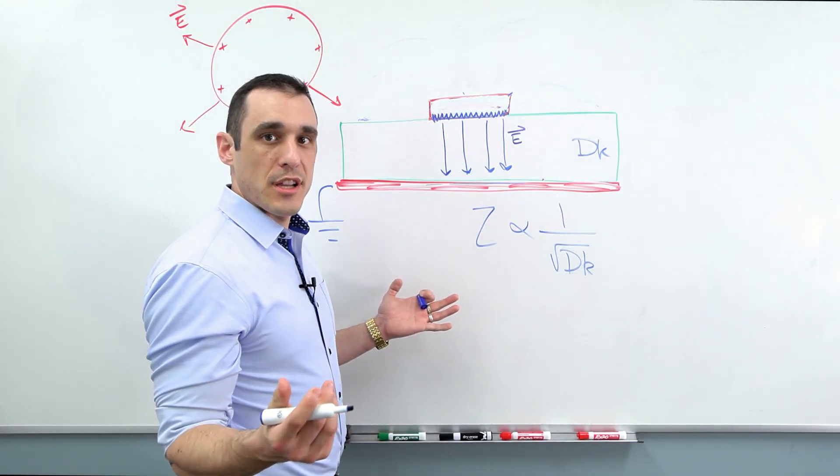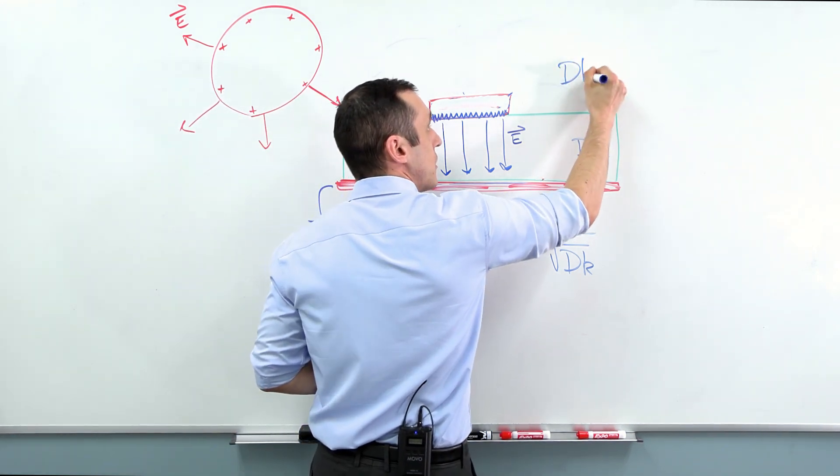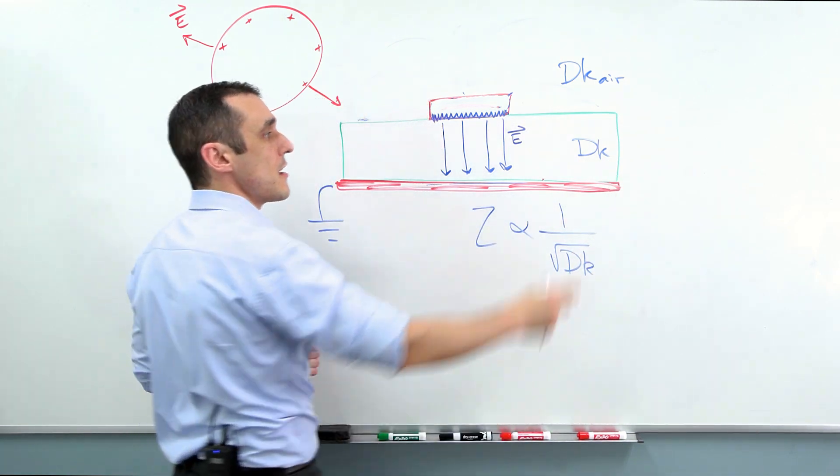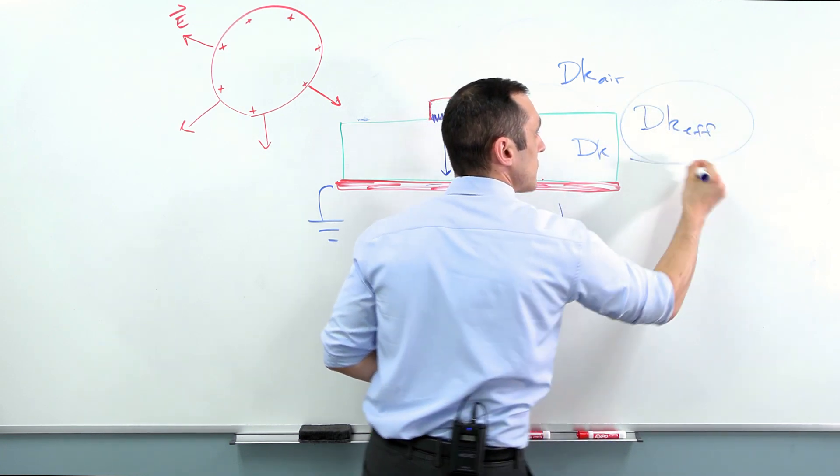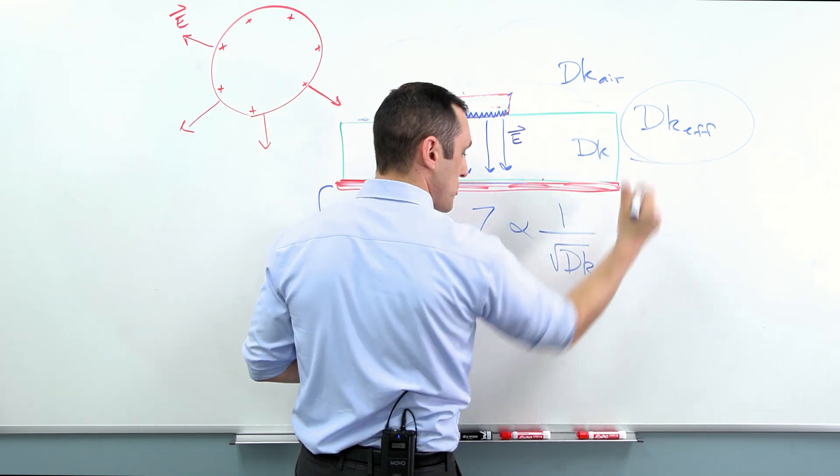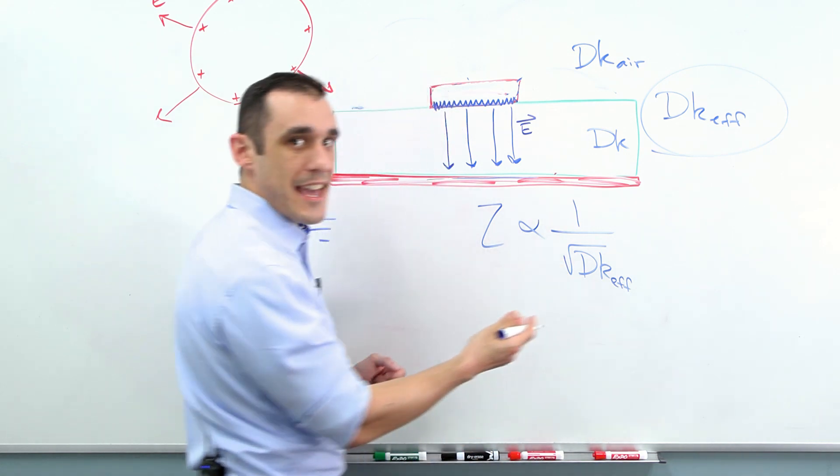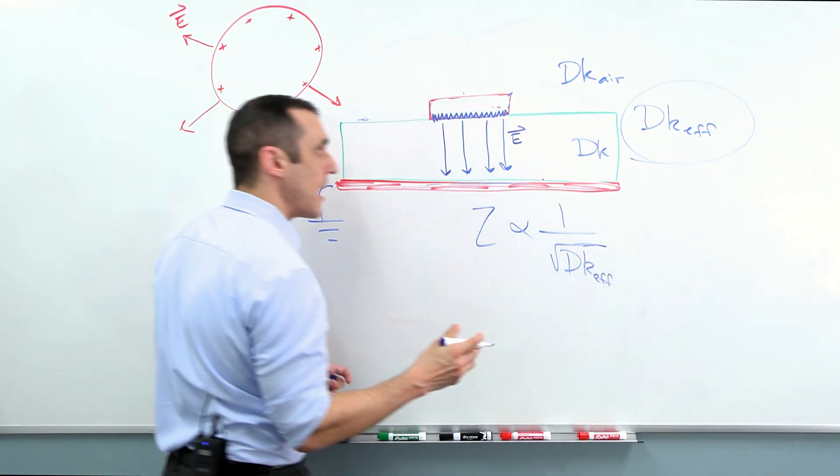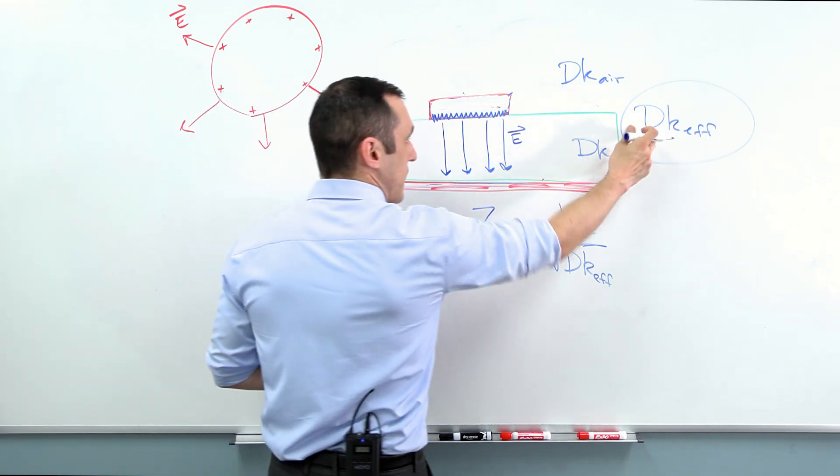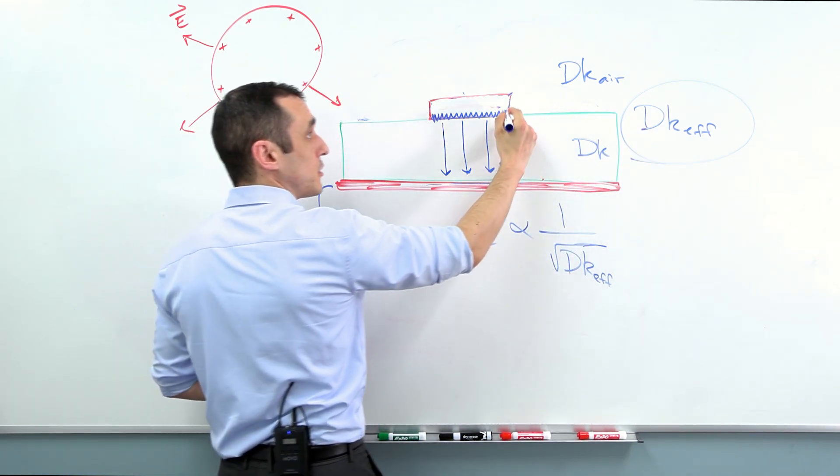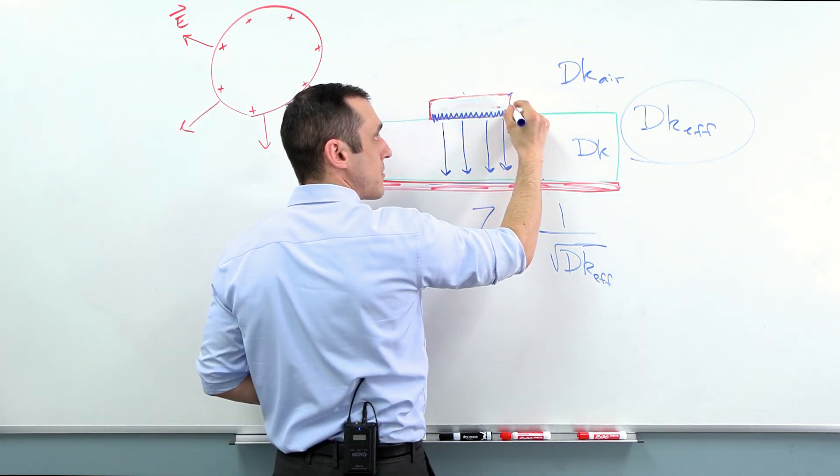But what do we really have in a transmission line? Well what we really have in a transmission line is that the dk value of air also matters because these two values come together to give us a dk effective value. And this is actually the value for a microstrip that determines the impedance of the line. So it's actually proportional to one over a dk effective value. And this is important because the two media together actually determine this dk effective value. So in order for this dk effective value to arise some of these field lines have to exist in the air above this PCB substrate. So again we're talking about a microstrip here.